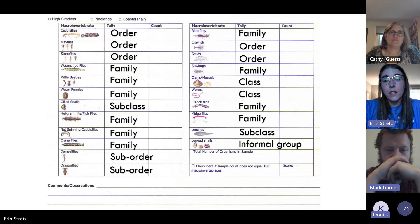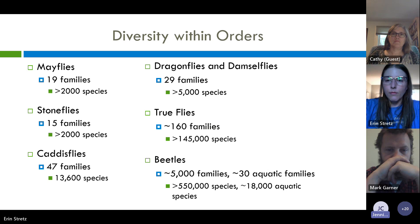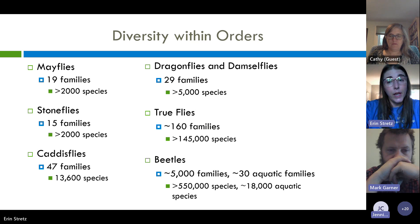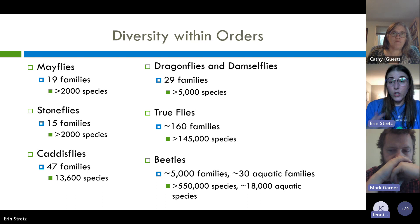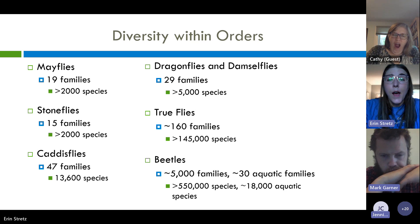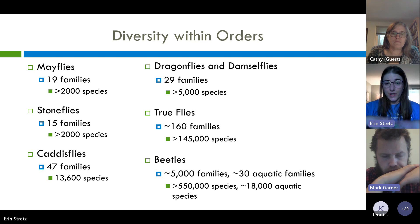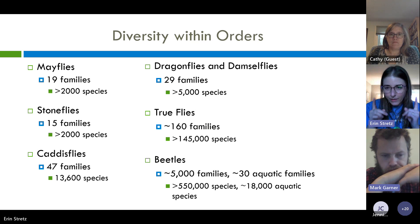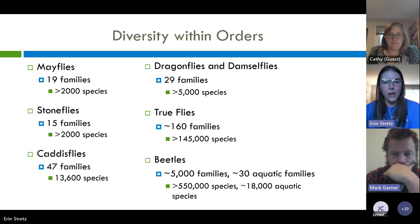Within each of these categories there's some diversity. With mayflies specifically there could be 19 different families we might find. Here in New Jersey we tend to find the same taxa over and over, so you'll get used to visually identifying the specific types of mayflies in your streams. But it's important to stay open and think about the characteristics that define each taxon — don't get bogged down just identifying the same one every time and trying to categorize anything different elsewhere.